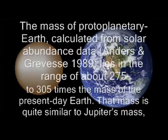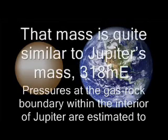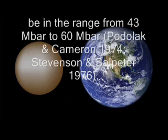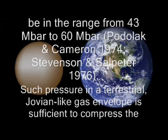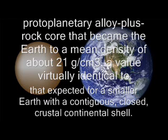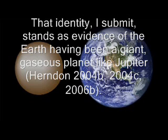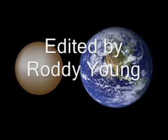Pressures at the gas-rock boundary within the interior of Jupiter are estimated to be in the range from 43 Mb to 60 Mb (Podolak and Cameron 1974; Stevenson and Salpeter 1976). Such pressure in a terrestrial Jovian-like gas envelope is sufficient to compress the protoplanetary alloy-plus-rock core that became the Earth to a mean density of about 21 g per cm³ — a value virtually identical to that expected for a smaller Earth with a contiguous, closed, crustal-continental shell. That identity, I submit, stands as evidence of the Earth having been a giant gaseous planet like Jupiter.